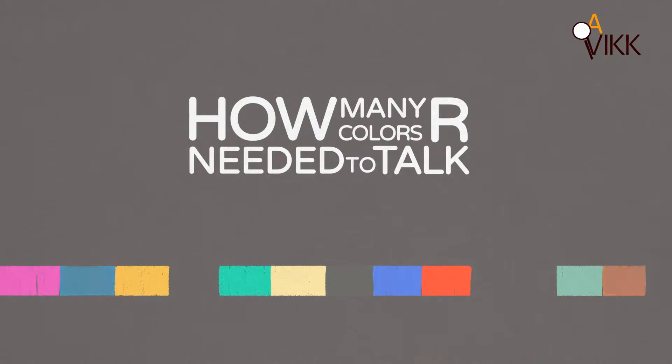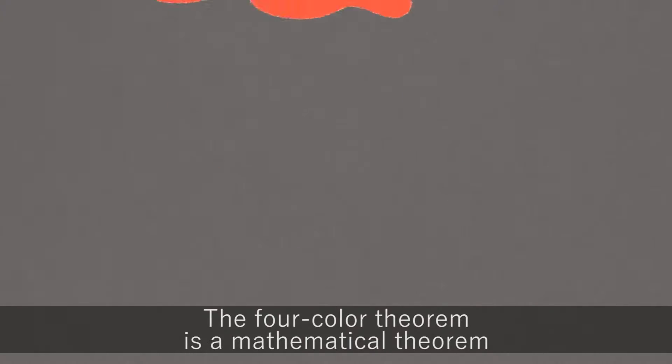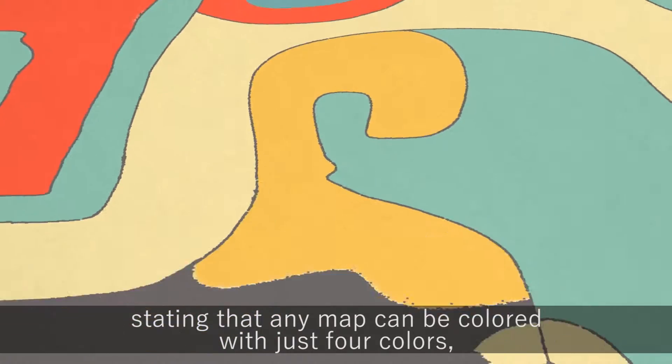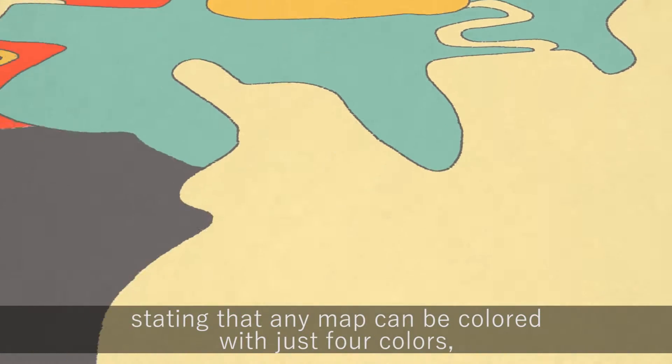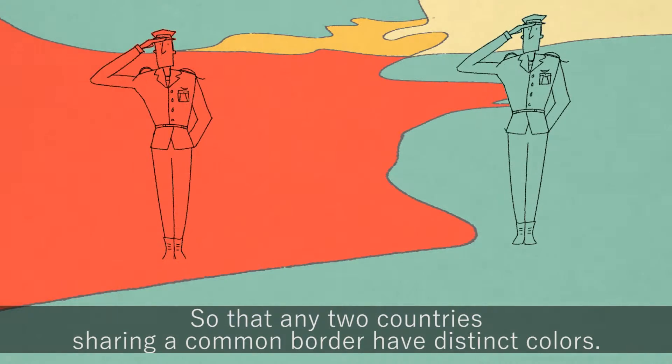How many colors are needed to talk on a cell phone? The four-color theorem is a mathematical theorem stating that any map can be colored with just four colors, so that any two countries sharing a common border have distinct colors.